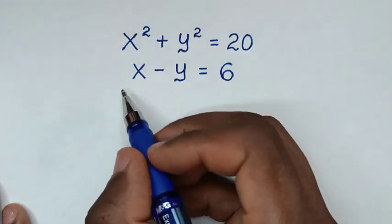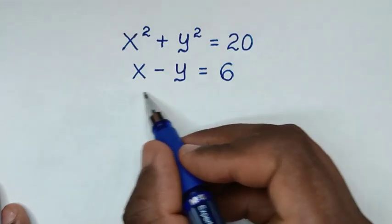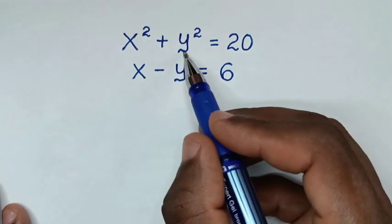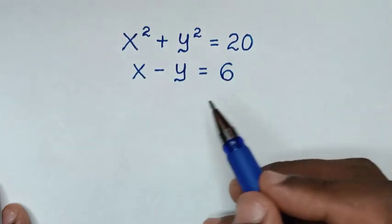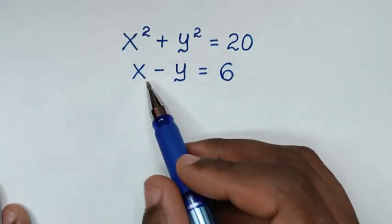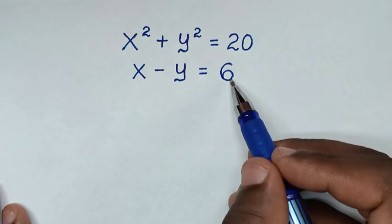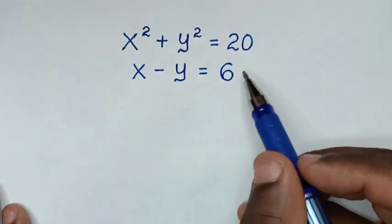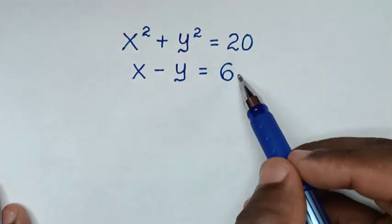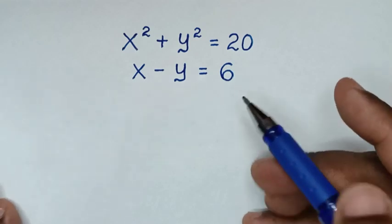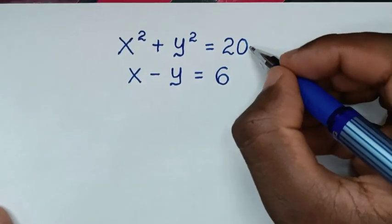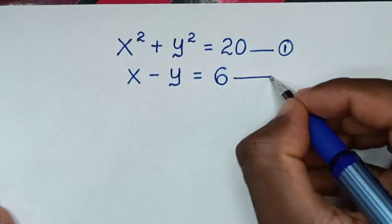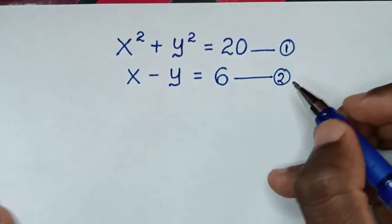Hello, you are welcome to solve this math problem which is x squared plus y squared is equal to 20, and x minus y is equal to 6. We need to find the values of x and y from these two systems of equations. We label this as equation 1 and this as equation 2.